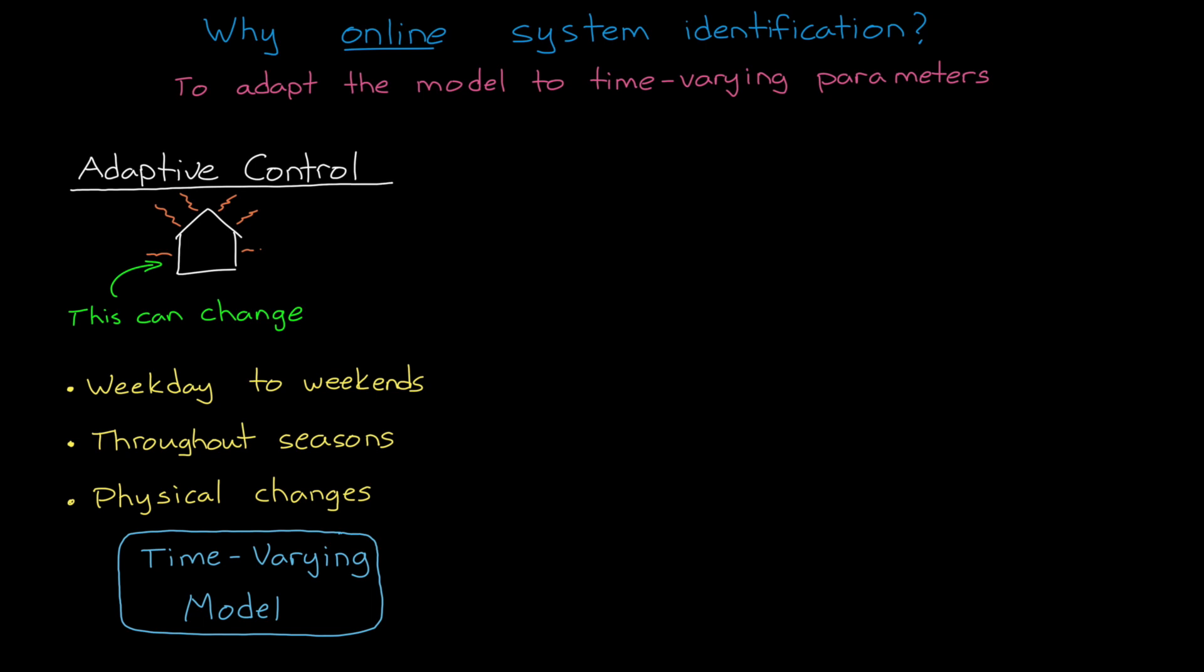Adaptive control and other methods that use system ID, like model predictive control, are absolutely awesome. I've left some links to some MATLAB examples that you can play around with in the description of this video.